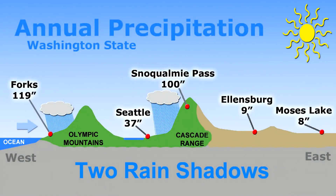Here in the Pacific Northwest, we actually have two rain shadows. In winter months at higher elevations, it's not rain — up here in the Cascades, annual snowfall is measured in tens of feet.